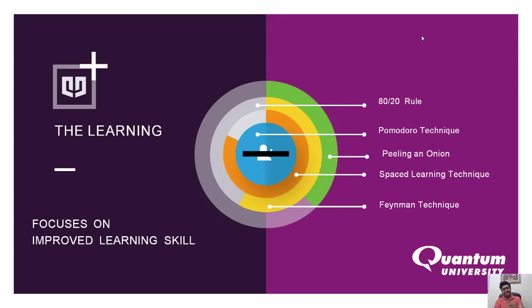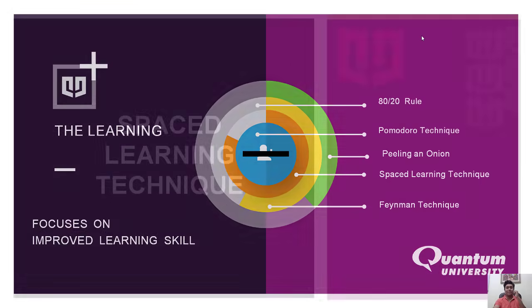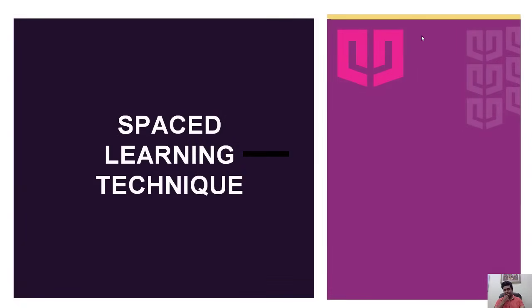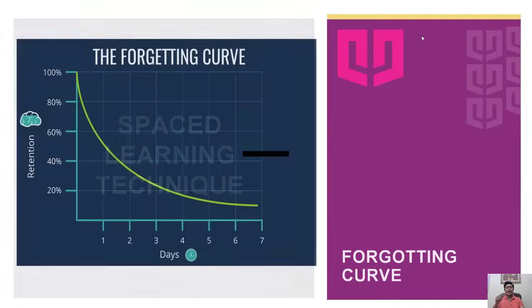So let's start with the first technique, which is the spaced learning technique. It is learning through different chunks of spaces. But before learning this technique, we need to understand our brain phenomena, and the phenomena we can see on the screen - that is the forgetting curve.